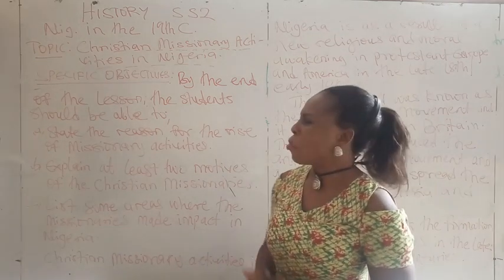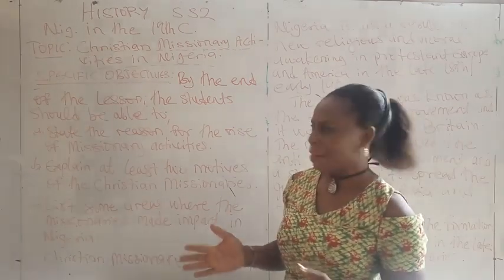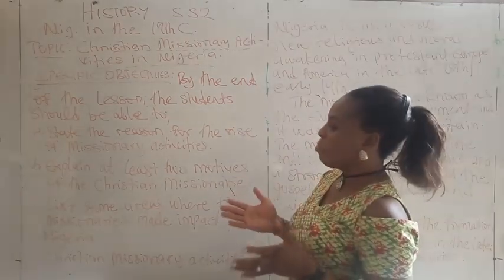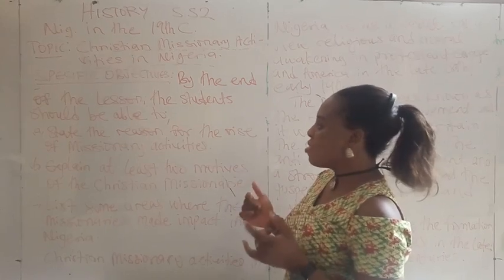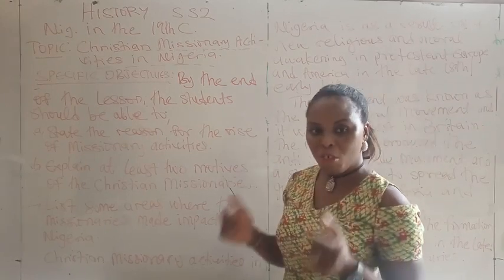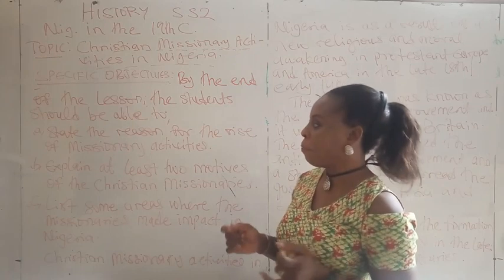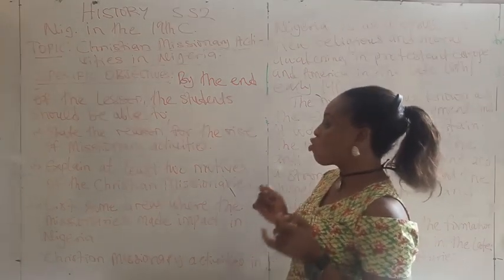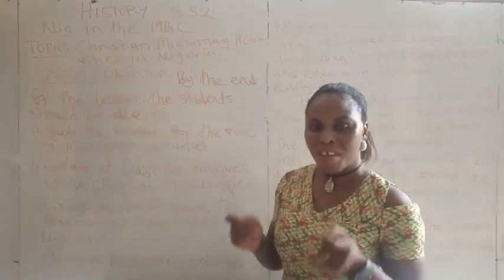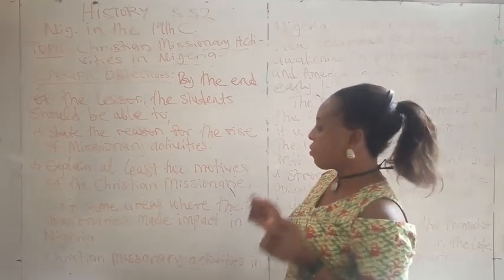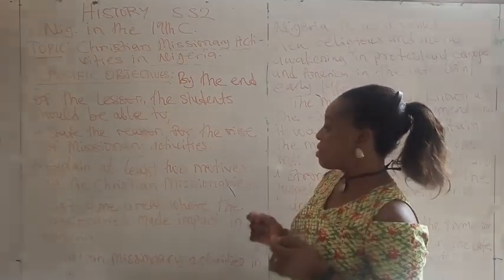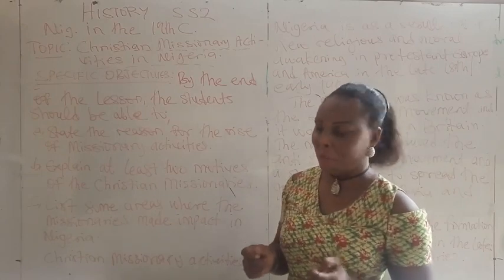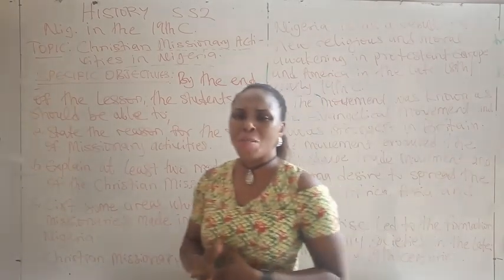What do we hope to achieve by the end of this class? First, you should be able to state the reason for the rise of missionary activities in Nigeria. Number two, explain at least two motives of the Christian missionaries. Then three, list some areas where the missionaries made impact in Nigeria.